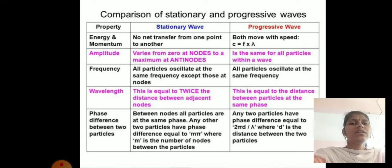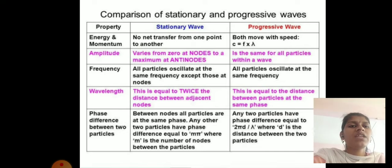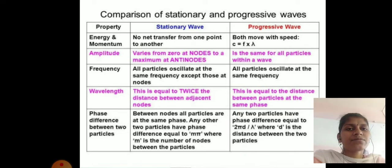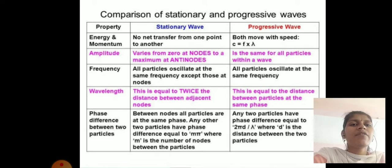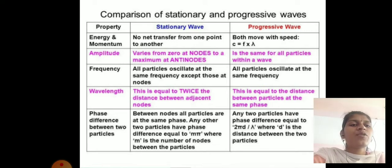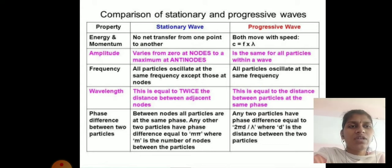Comparison between stationary and progressive waves. In stationary waves, there is no net transfer of energy or momentum from one point to another. In progressive waves, energy and momentum both move with speed v = fλ.